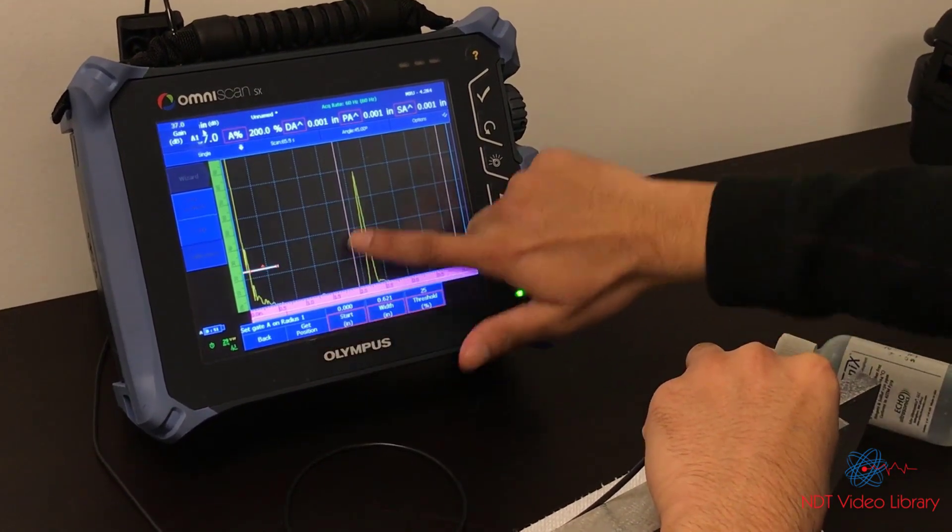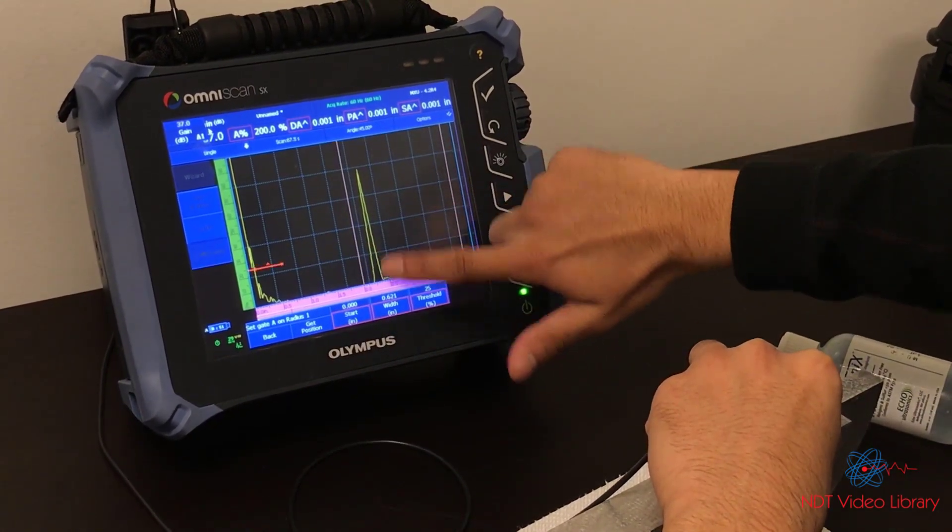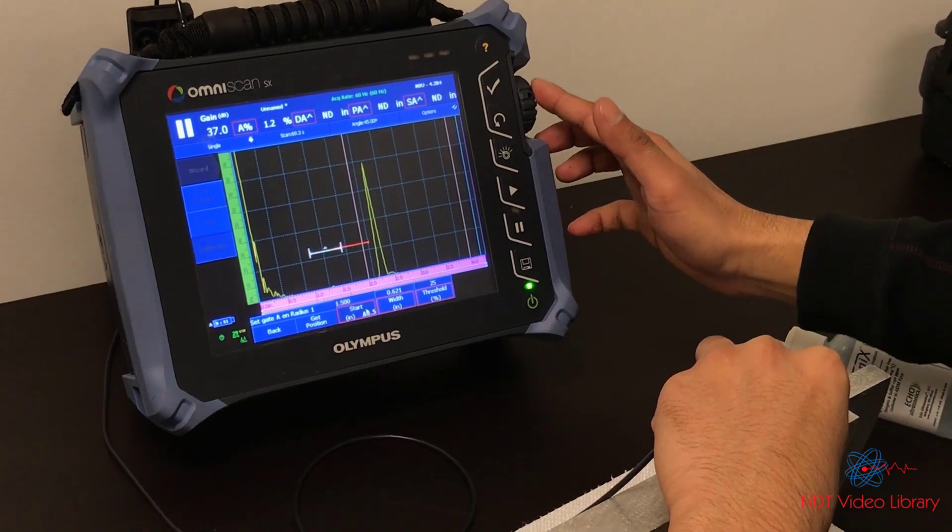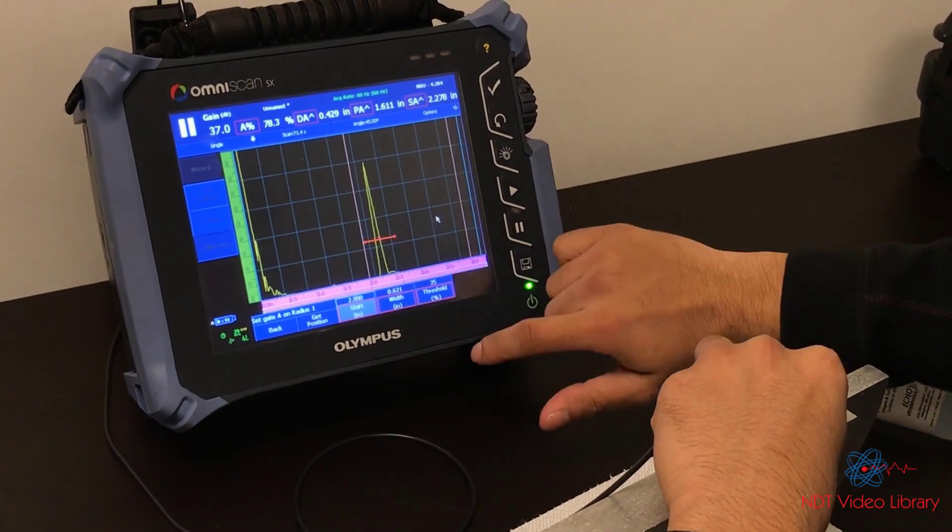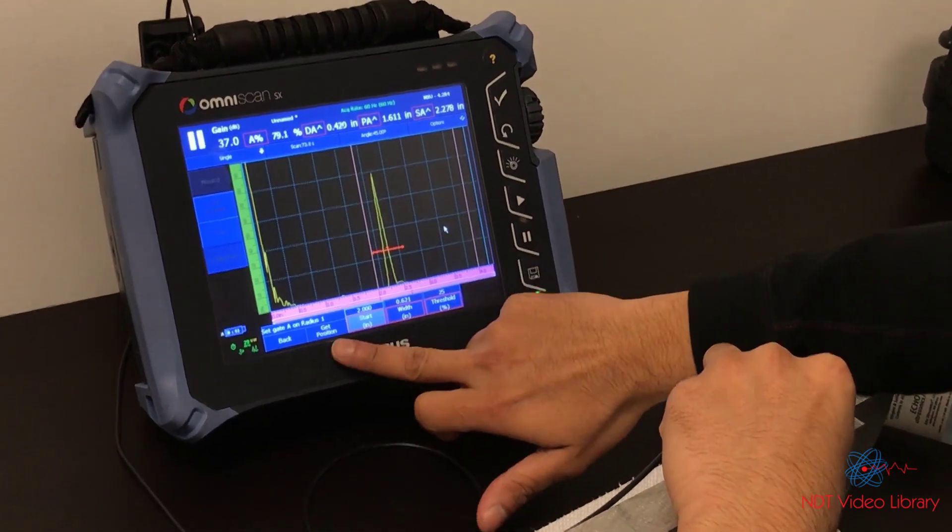So that's kind of where the maximum is. Then what do I do? I need to get position for this one. So I have to move the gate on this signal. I use the start to move the gate there and then hit get position.